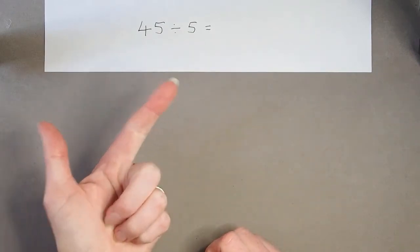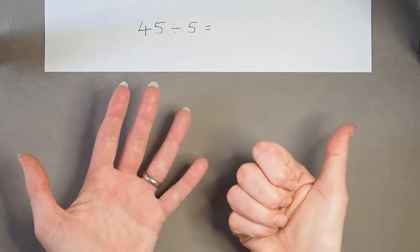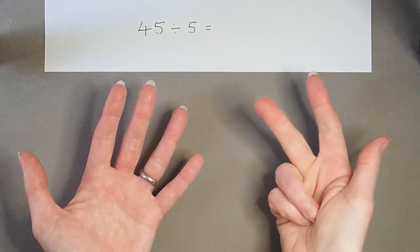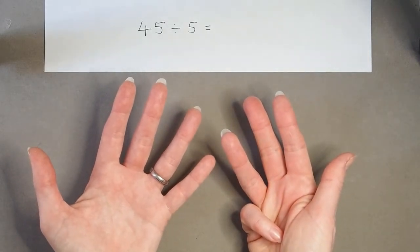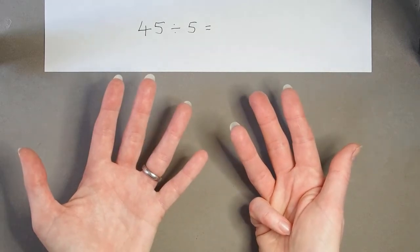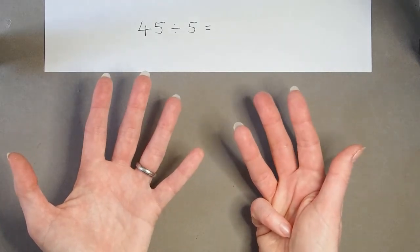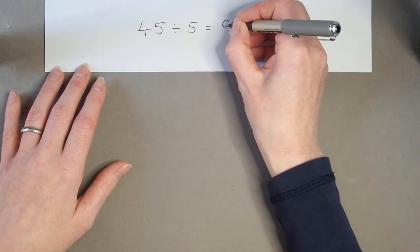So we're going to count in 5's until we get to 45, keeping track each time we count to 5 on our fingers to see how many 5's it takes us to get to 45. So 5, 10, 15, 20, 25, 30, 35, 40, 45. So I can see 45 divided by 5 is 9. I counted 5 9 times. And that's my answer.